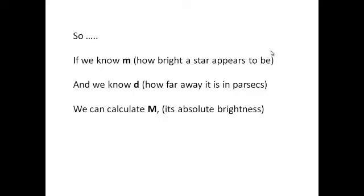So if we know little m, which is how bright a star appears to be, and we know d, which is how far away it is in parsecs, then we can calculate big M, which is its absolute brightness. And we do that using this equation: big M equals little m plus 5 minus 5 log d. That last bit of the equation is log to the base 10 of d.